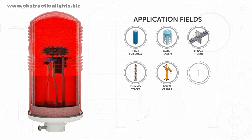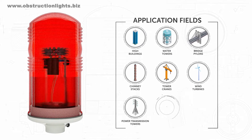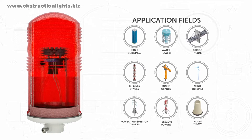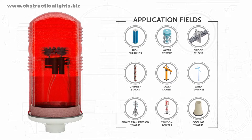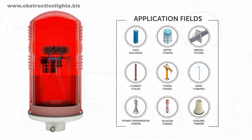The obstruction lights are designed not for illumination, but for emitting a light signal of a certain intensity in the given direction, and they are used as light marking systems of high objects.